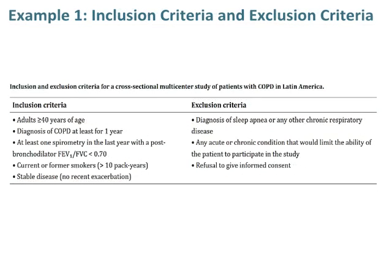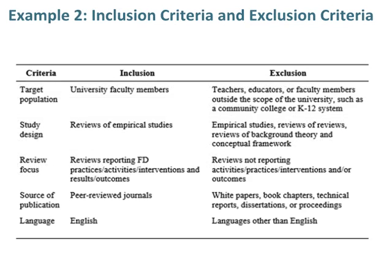An example of inclusion criteria and exclusion criteria is given for a cross-sectional multi-center study of patients with COPD in Latin America. A second example of inclusion criteria and exclusion criteria is given to illustrate how to make criteria for target population, study design, review focus, sources of publication, and language.